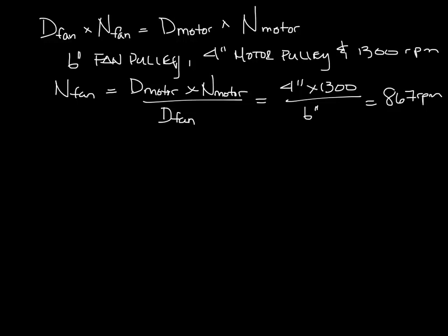So you can calculate the new CFM using the fan laws. Or more likely, you'll use the fan laws to calculate the RPM you need because you know the CFM you need. So let's say you are getting 2000 CFM at your 867 RPM fan, but you need 2400 CFM out of your fan.